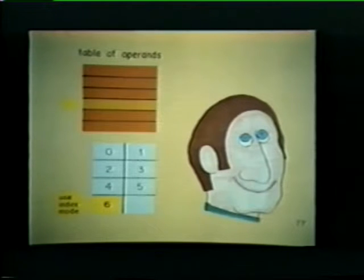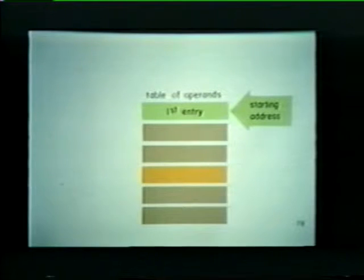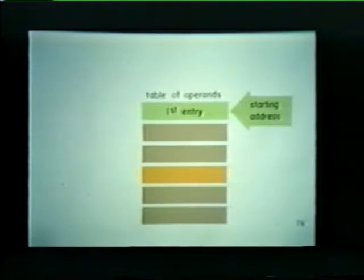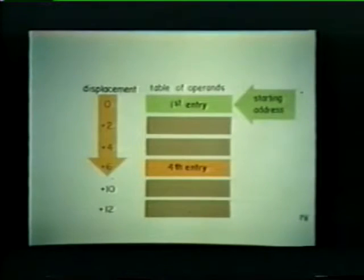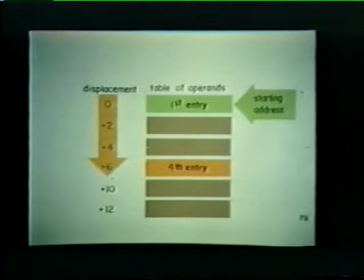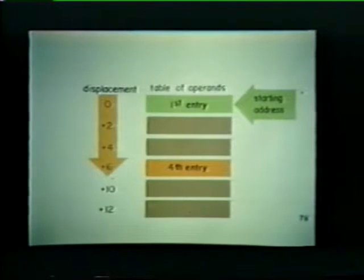Here's how the index mode works. We can use a starting address to define the location of our table of operands. Note that this starting address always directs us to the first entry in the table. Then, to get to any other entry in the table, we use a displacement value. This displacement value defines the location of each entry relative to the table's starting address.